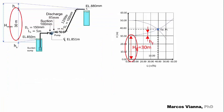In the case of our problem, the geometric head is the difference between the elevation of the outlet of the pipe at the reservoir and the water level in the suction sump.